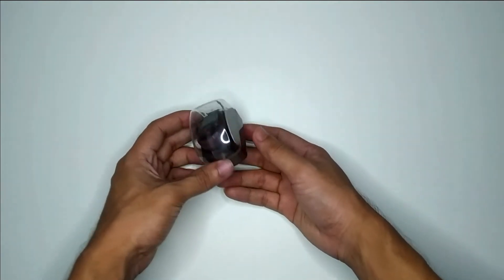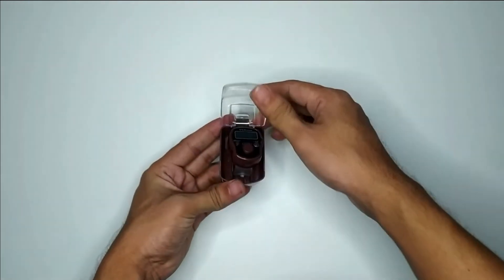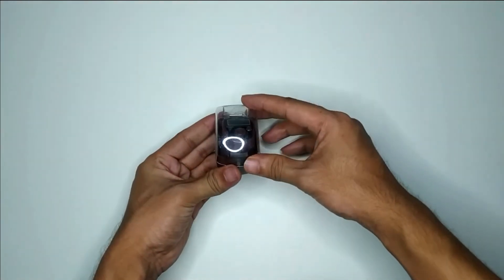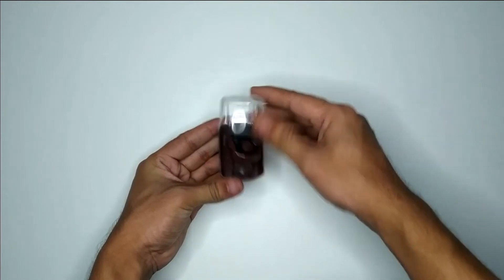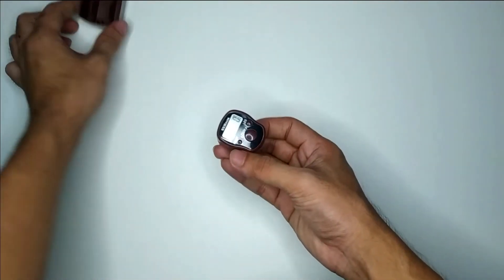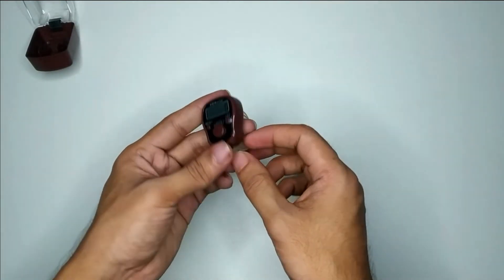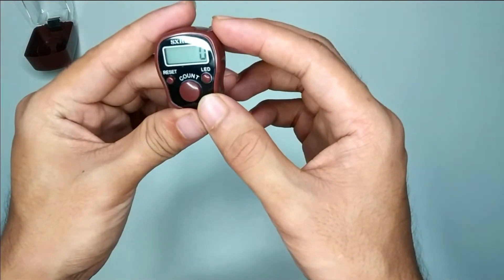I'll show you this and give a small review. There is a box for this counter. This is the main device. I'm unboxing this. There are three buttons you can see.